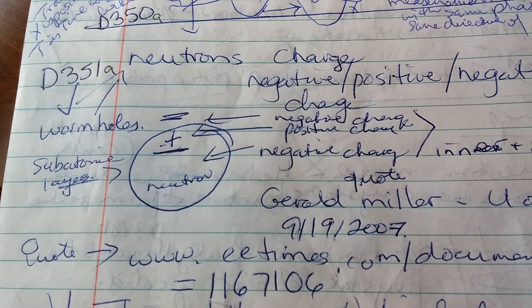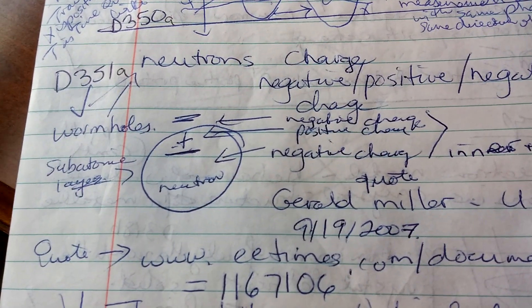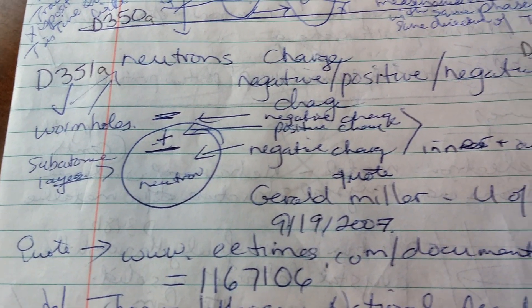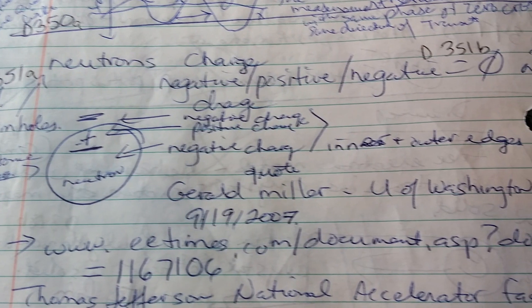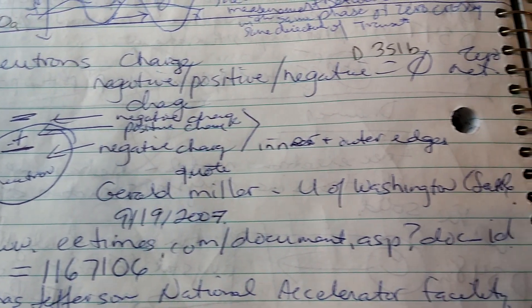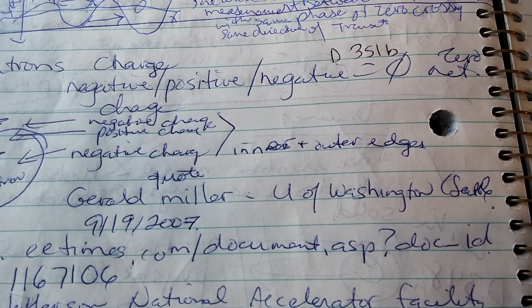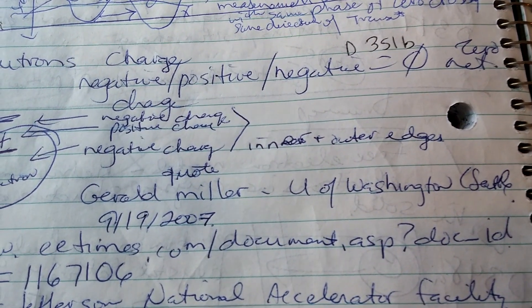In 351, it talks about the neutron's charge. There's negative, positive, negative, which equals zero — net zero.